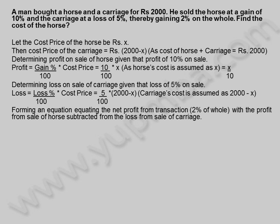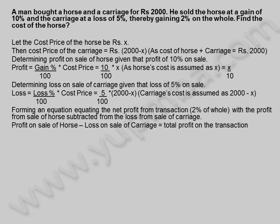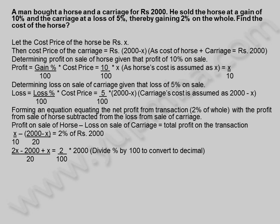Forming an equation equating the net profit from the transaction — 2% of whole — with the profit from sale of horse subtracted by the loss from sale of carriage. Profit on sale of horse minus loss on sale of carriage equals total profit: X by 10 minus (2,000 minus X) divided by 20 equals 2% of 2,000 rupees. This simplifies to (2X minus 2,000 plus X) divided by 20 equals 2 by 100 into 2,000, giving 3X minus 2,000 equals 800, so 3X equals 2,800.